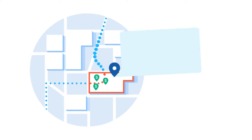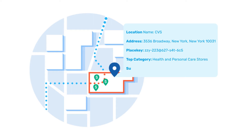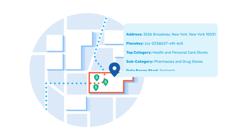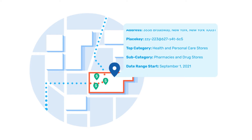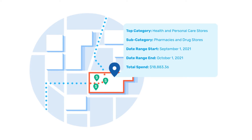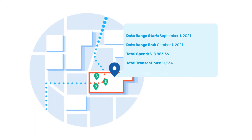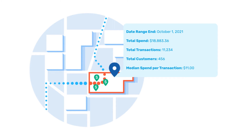The Spend dataset is built upon SafeGraph's comprehensive points of interest data. It provides detailed attributes about physical places, updated monthly to ensure freshness. Spend provides aggregated and anonymized debit and credit card transactions at specific locations, including median spend per transaction, spend by customer frequency, and more insights into location-based consumer spending behavior.